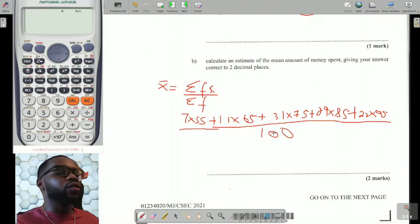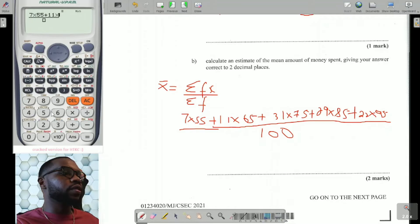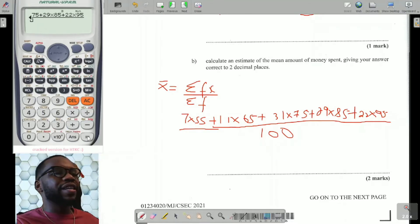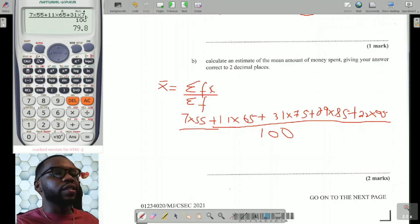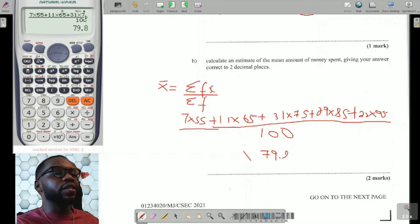So everything will be over 100. Now, here's where I'm going to make my calculator do all of the work for me. I go to the fraction bar. I have 7 times 55 plus 11 times 65 plus 31 times 75 plus 29 times 85 plus 22 times 95. That's 79.8. But remember now, this is money, two decimal places, which means I'm going to have to add a zero at the end. And I need to put on the dollar sign because we're dealing with money here. Money has two decimal places.